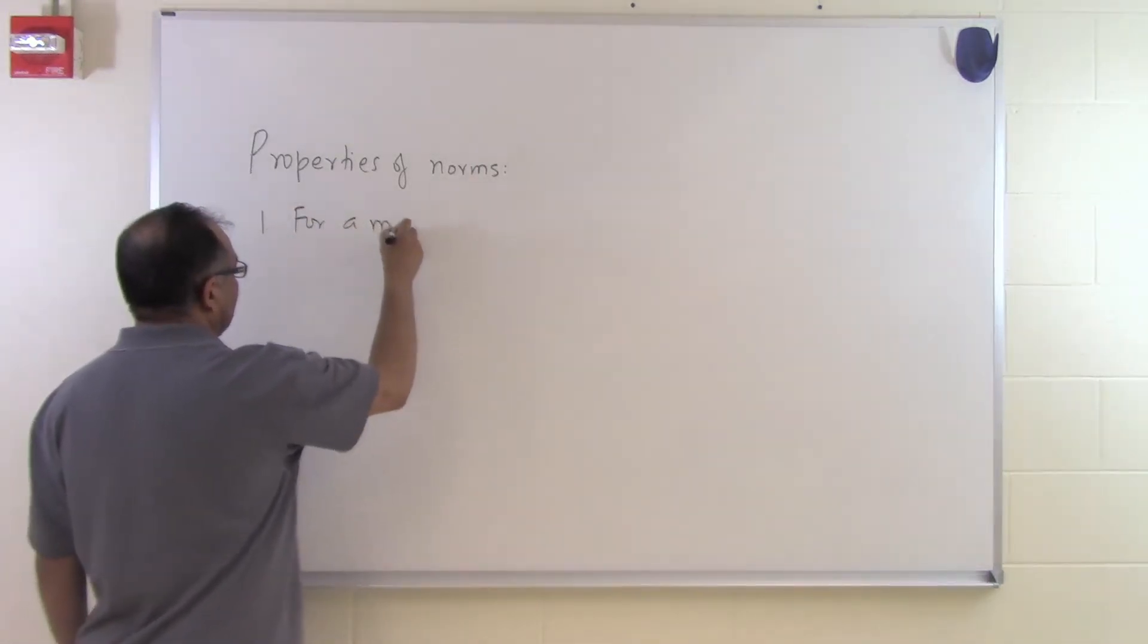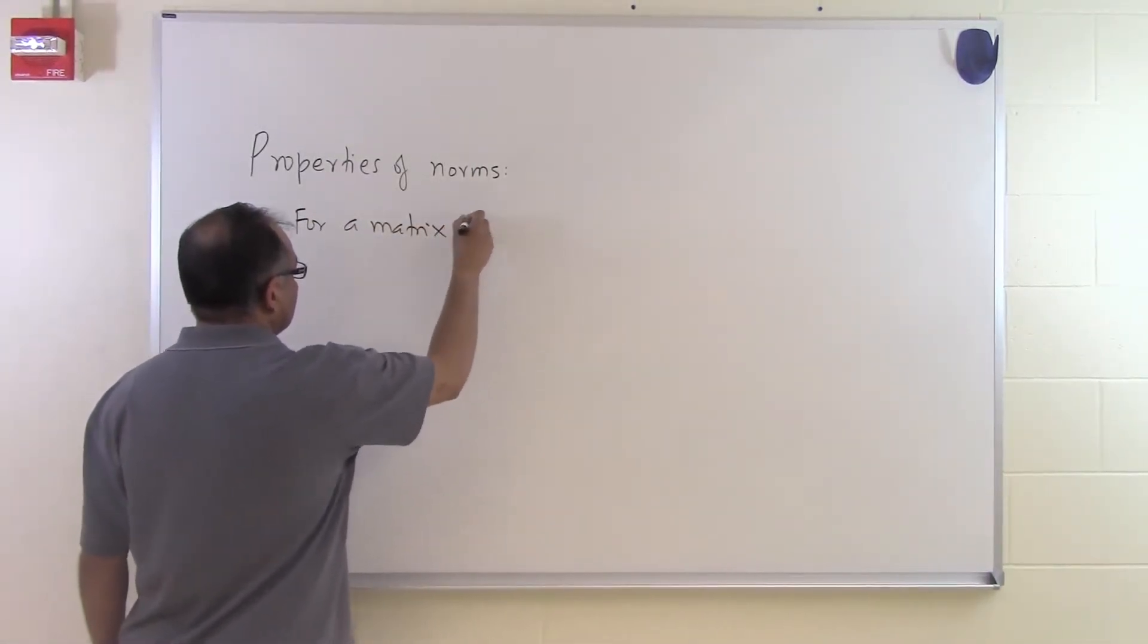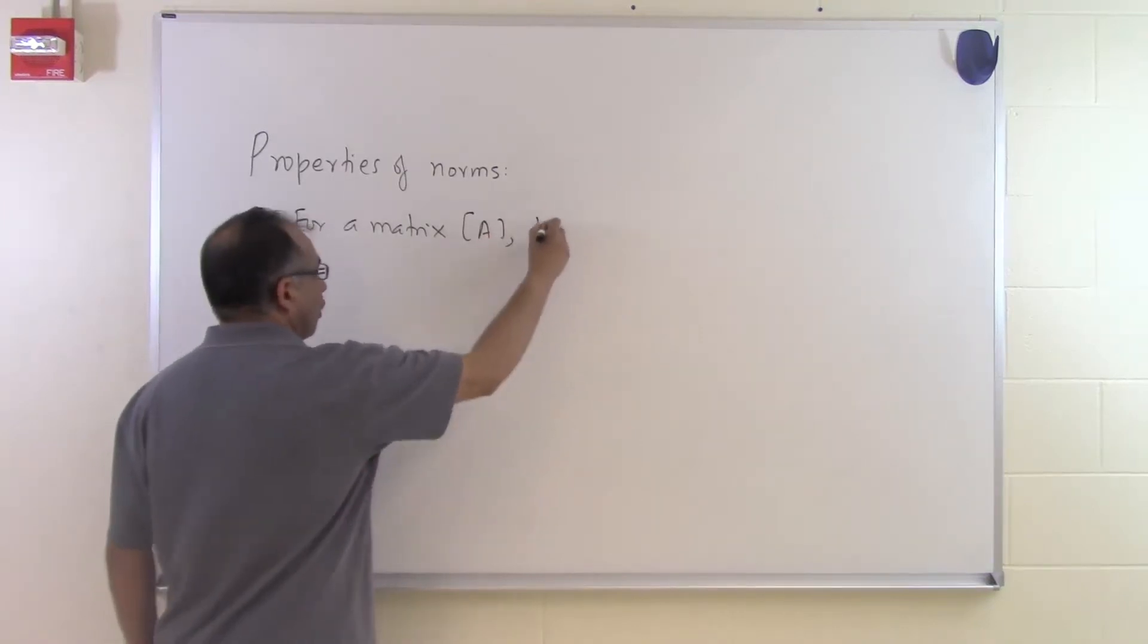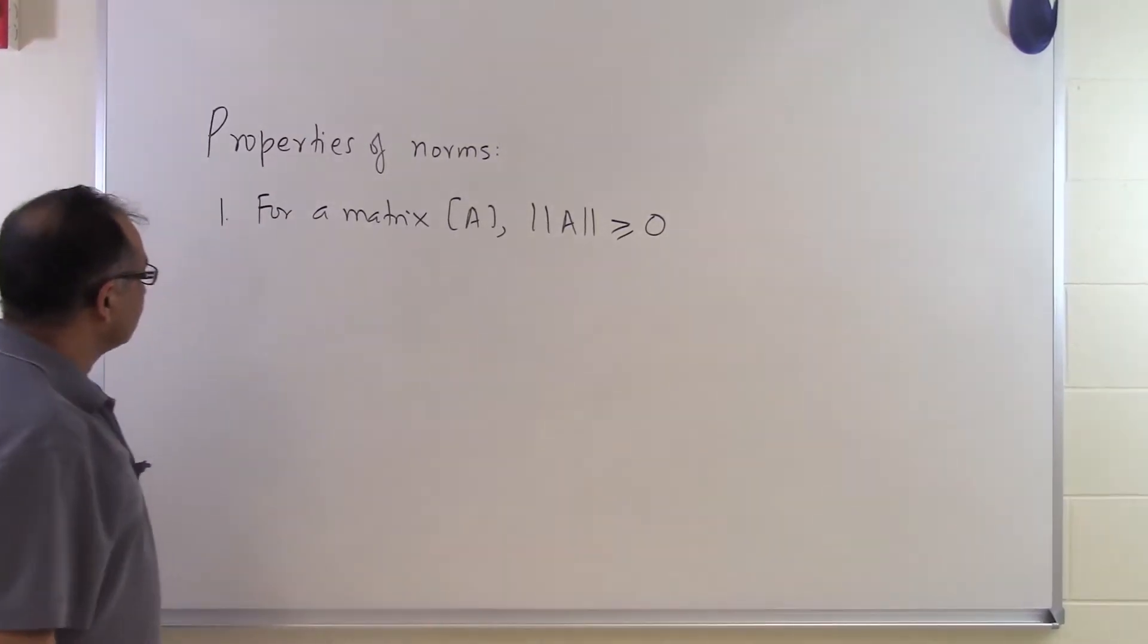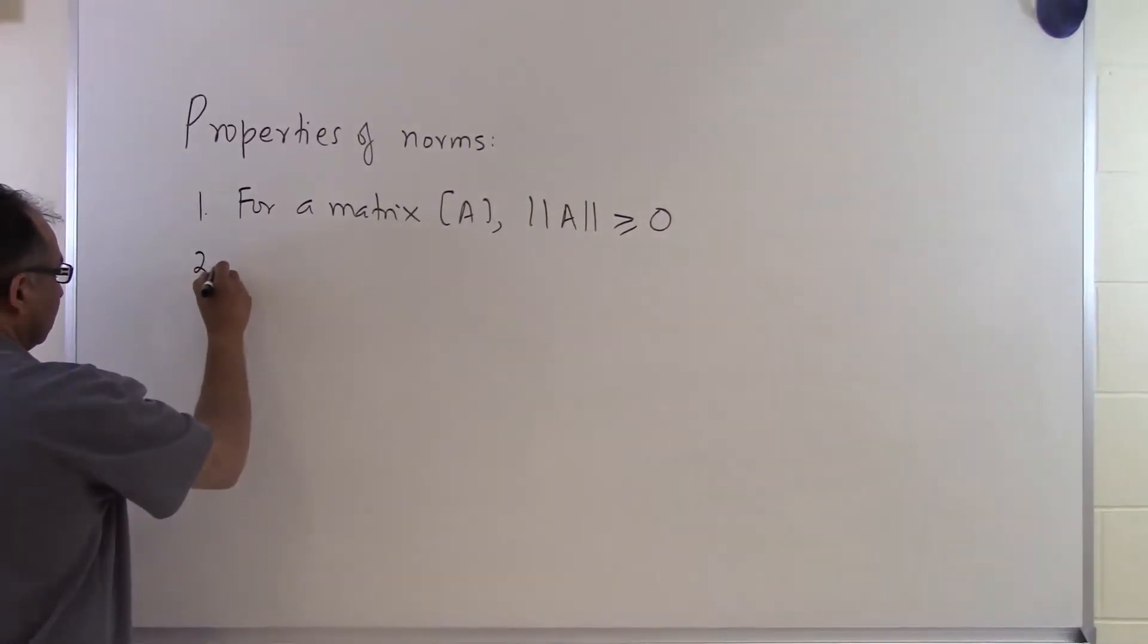For matrix A, the norm of A will always be greater than or equal to 0. So that is the first property which you need to know.